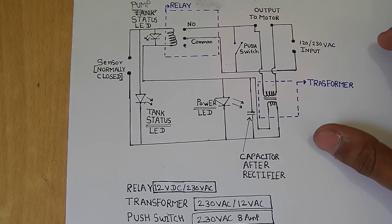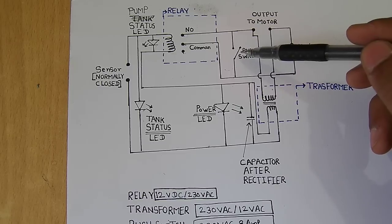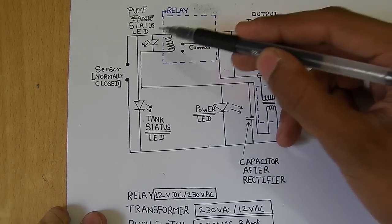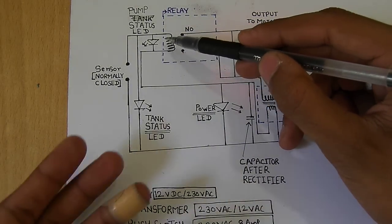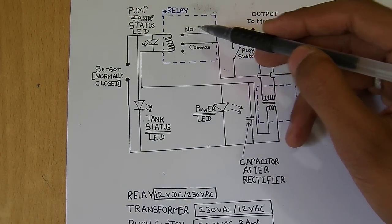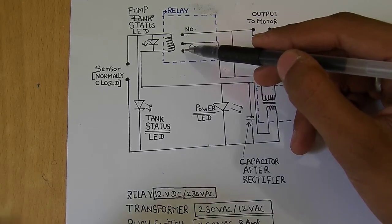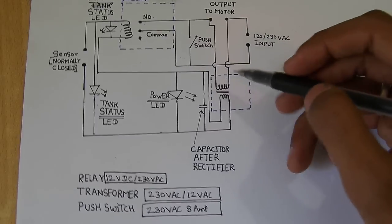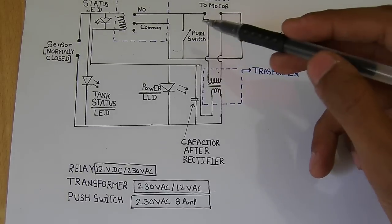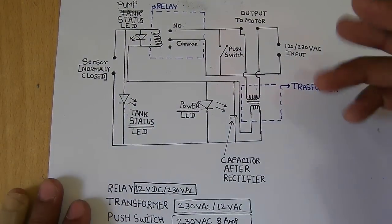This circuit is quite simple. We have used three basic main components: relay, transformer, and a push button. As you can see here, these are relay coil terminals which you have to power in order to turn on this relay. This is the normally open terminal (NO), this is common terminal, and this is normally closed terminal, but we're not going to use this terminal for our circuit. Then this is a 230 volt to 12 volt AC transformer, and this is the push button.